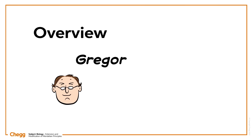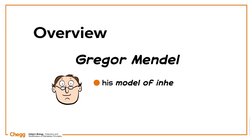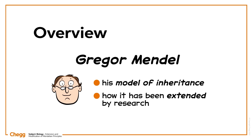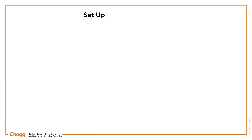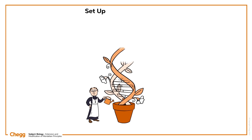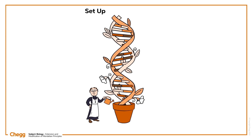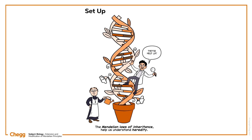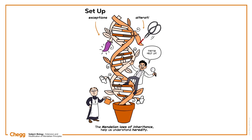This video is about Gregor Mendel, the model of inheritance he famously defined in the 1800s, and how it has been extended by subsequent research. In 1856, an Austrian monk named Gregor Mendel carried out a decade-long research project. Still today, the discoveries he made, known as the Mendelian Laws of Inheritance, help us understand heredity. But he didn't have it all figured out — we've since found exceptions to his rules and added some alterations.